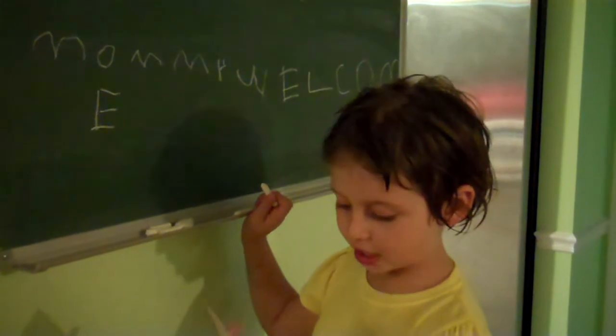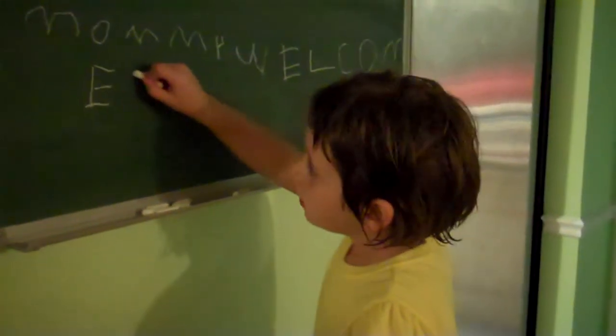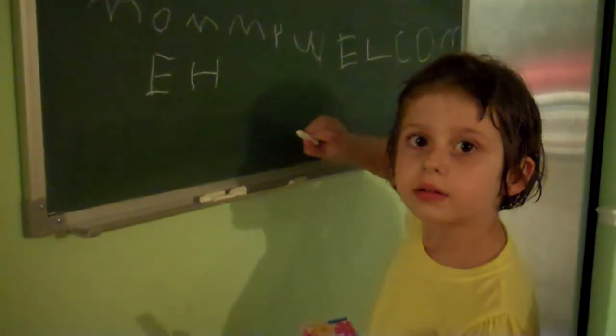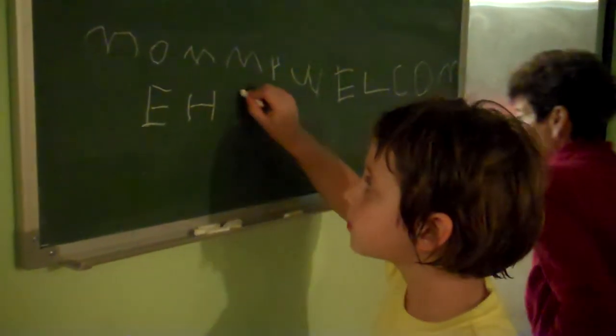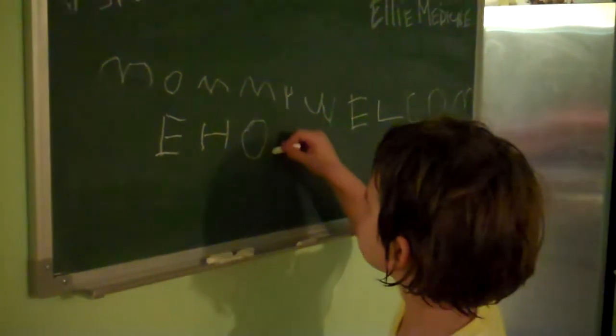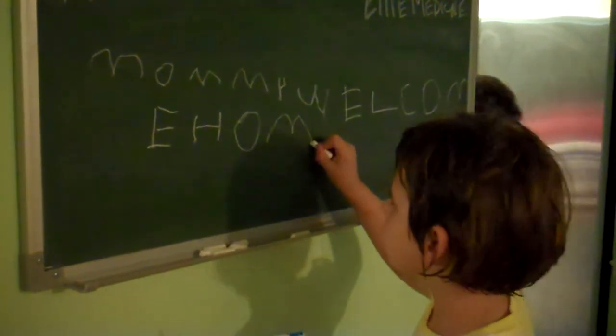And then how do you write home? H. I forgot to get the telephone number there. I'll get the telephone number for you. Now what? O, M, E.